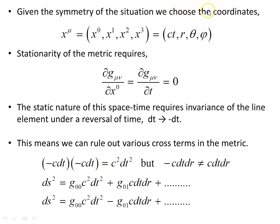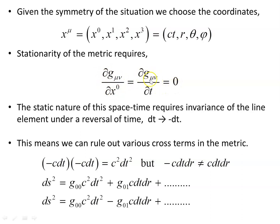Given the symmetry of the situation, we choose the coordinates x^μ: x⁰, x¹, x², x³ as ct, r, θ, and φ. These are the coordinates used throughout these videos. As a viewer pointed out, the c was missing from some terms in the original — so I'm remaking this video by putting all the c terms back in, which is a good idea for people learning it for the first time. The stationarity of the metric requires that the partial derivative with respect to the time coordinate of the metric is zero — none of the metric terms depend on t.